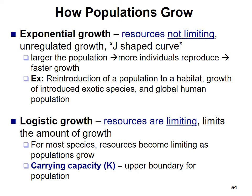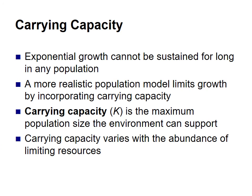Logistic growth occurs when resources are limiting. For most species, resources become limiting as the population grows, and there's a carrying capacity — the upper boundary for a particular population and the maximum population size the environment can support. Exponential growth cannot be sustained for too long in any population, so a more realistic model includes carrying capacity. The carrying capacity varies with the abundance of limiting resources — for example, too wet or too dry a spring can affect plant growth and cascade up the food chain.